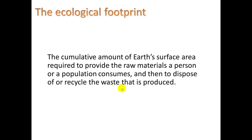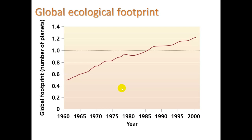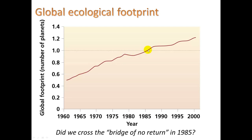So in theory, you could be living in some kind of a closed loop. This is the global footprint going back starting in 1960. In 1960, it took about half of an Earth to support Earth's population — no problem. But as time went on, what happened in 1985 right here? Did we cross the bridge of no return? Will we ever go back below this level?